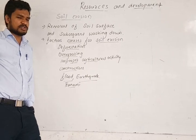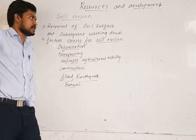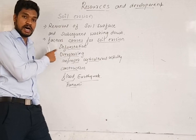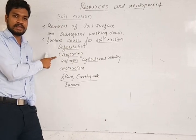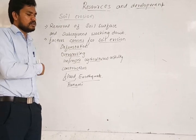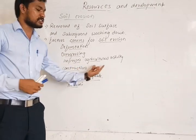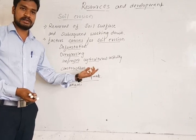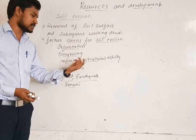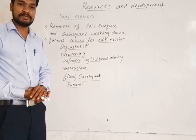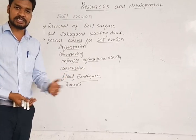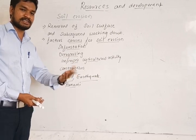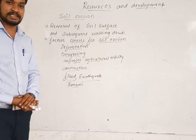If you are asked to explain soil erosion, you can describe all those things — deforestation and how it affects, overgrazing, improper agricultural activities such as using excess chemicals and vertical plowing, and construction activities. You can explain all these things when you get such a question.